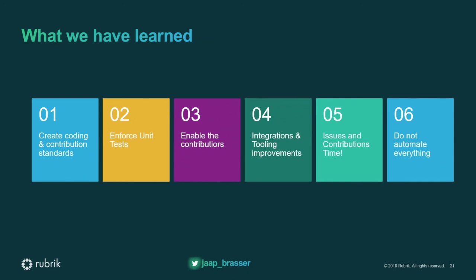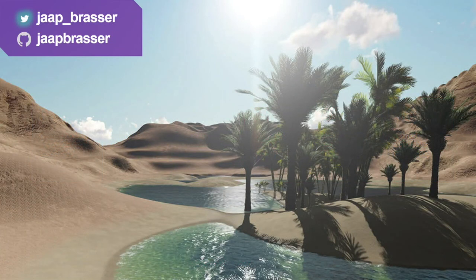Lastly, don't automate everything. I already gave the example with the change log — I tried to automate it, it didn't pan out the way I intended. Not automating everything actually worked out in our advantage. And with that, I managed to get out of the desert and reach the oasis. We now have a very happy SDK ecosystem. Thank you for your time — if you have any questions, I'll be here.